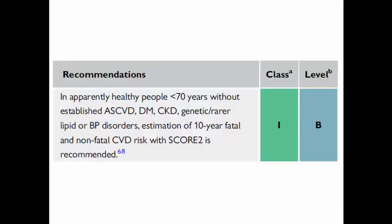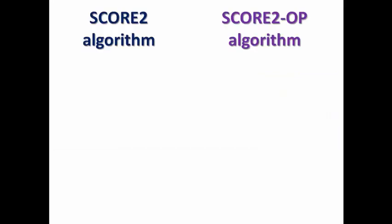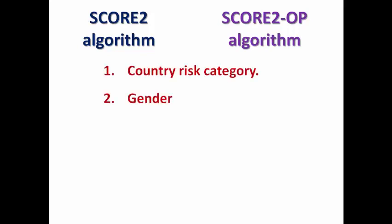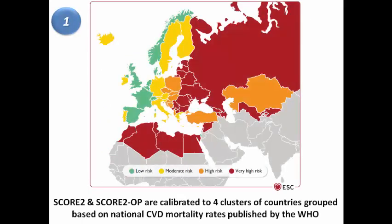So what parameters do I need in order to estimate risk using the SCORE2 algorithms? I need to know the country risk category, gender, age, smoking status, systolic blood pressure, and non-HDL cholesterol. Regarding country risk category, SCORE2 and SCORE2-OP are calibrated to four clusters of countries according to national cardiovascular mortality rates published by the WHO, dividing countries into low-risk, moderate-risk, high-risk, or very high-risk.